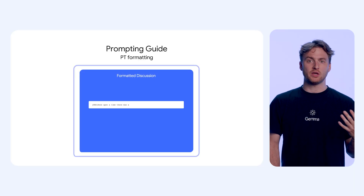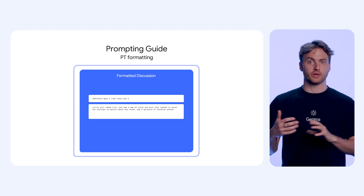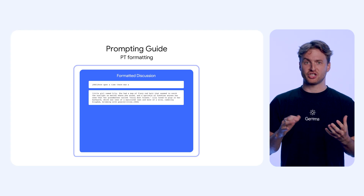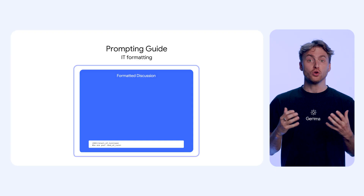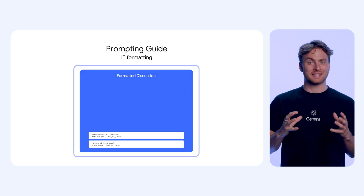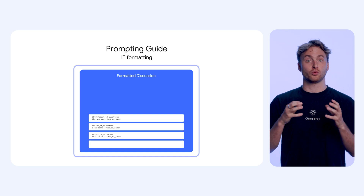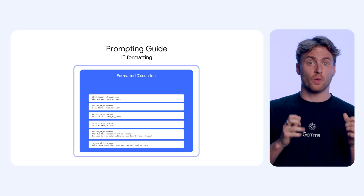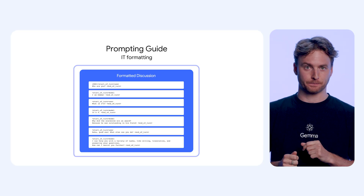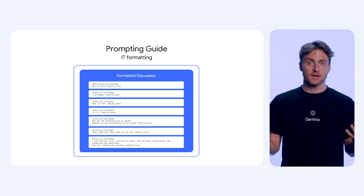One quick technical tip when you start working with Gemma: pay attention to special tokens that control how the model generates text. For the pre-trained model, you'll typically use BOS, the beginning-of-sequence token, to start your input, and you'll know the model is done when it generates EOS, the end-of-sequence token. For instruction-tuned models, you will also start with BOS, but you will use specific turn markers to differentiate between user input and the model's response. The generation for the IT model stops when the end-of-turn token is produced, not the end-of-sequence one. Depending on what library you use to run Gemma, this is sometimes handled behind the hood for you, so beware of that.